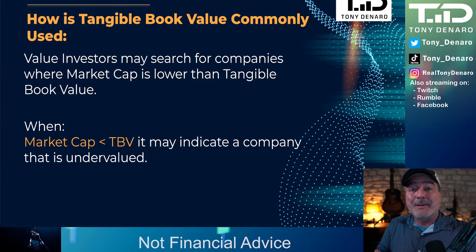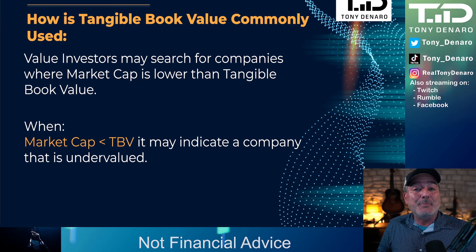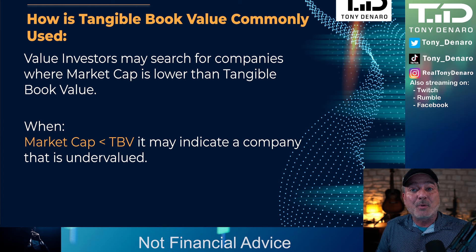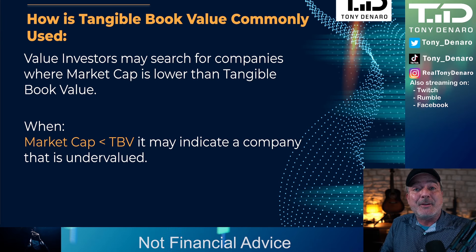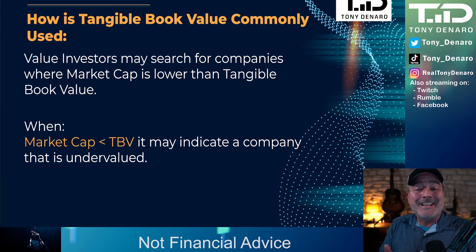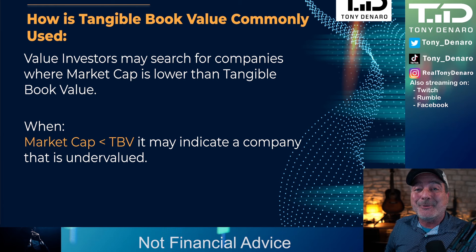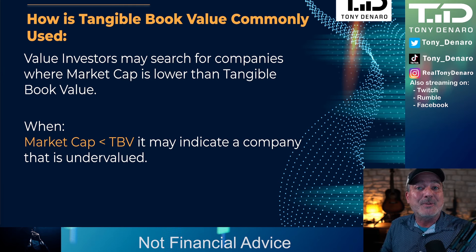As investors, we would normally look at book value or tangible book value when looking for value investment plays — defined as a company where the market cap is lower than the book value or tangible book value. Remember back in 2020, GameStop was famously a value play where the market cap was under the book value. If you have a thesis that the company will turn around and earnings will increase, that might be an opportunity to pick up a potentially undervalued company — though we need to look at many other factors besides just book value relative to market cap.